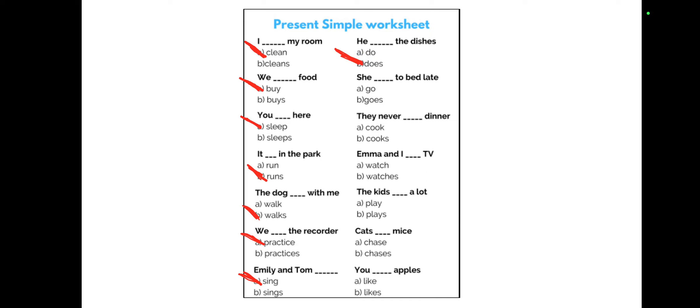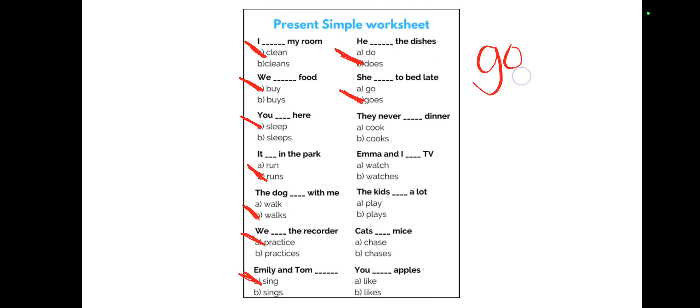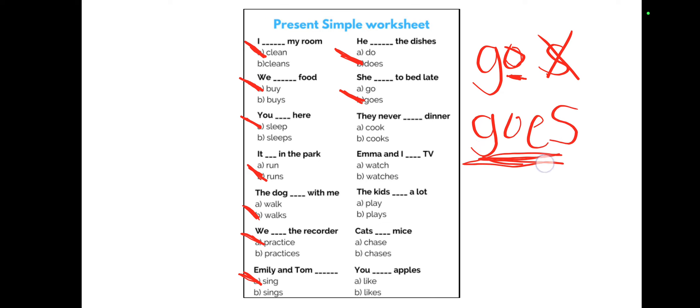Next, 'he' — remember he, she, it, we use 'does,' so the answer is 'b.' 'She goes to bed late.' Now 'goes' is a special case: the word 'go' ends with a vowel — a, e, i, o, u — and most of the time whenever a word ends with 'o' we don't simply add 's,' we add 'es.' So the correct form is 'goes,' and the answer is she goes to bed late.